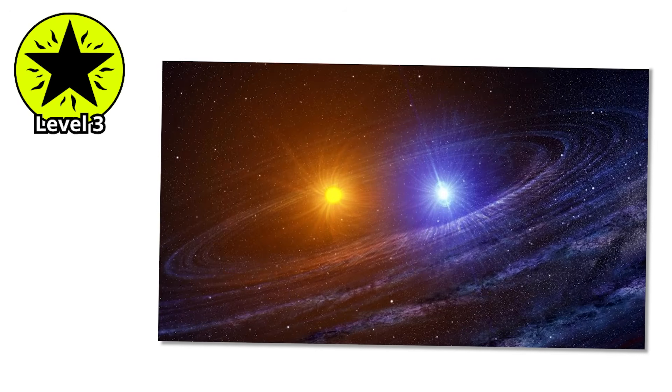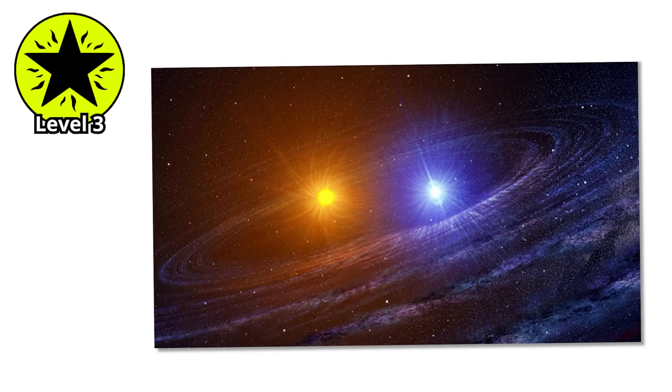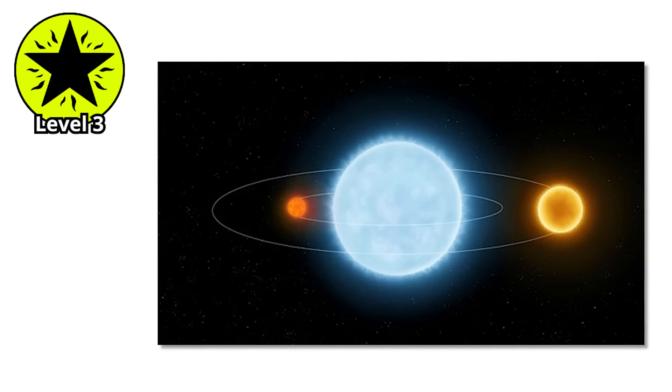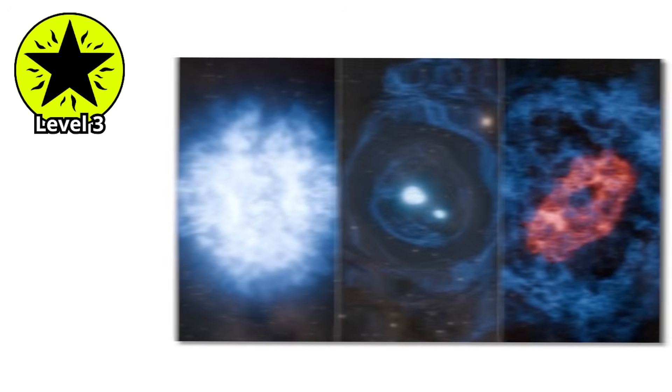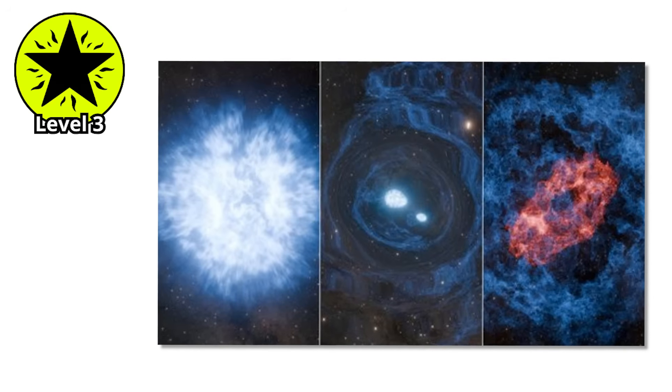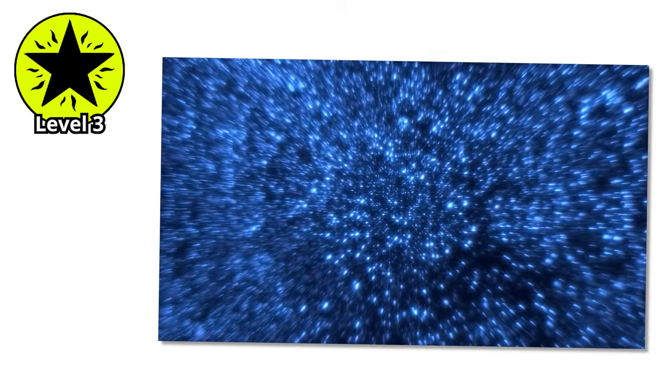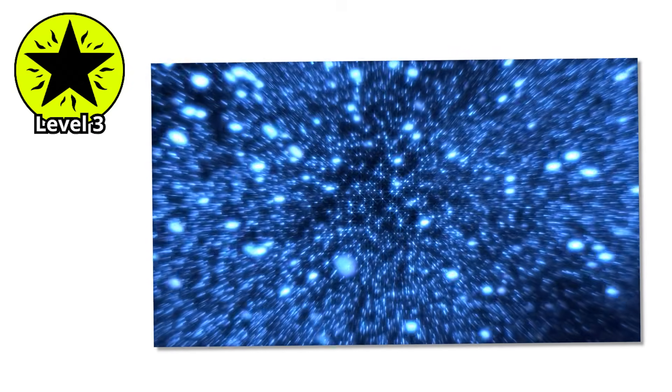But here's the trade-off for all that power. Blue giants burn through their fuel ridiculously fast. While the Sun will live for 10 billion years, a blue giant might only last 10 to 20 million years before exhausting its hydrogen. Eventually, it runs out of options. The core collapses and the star explodes in a supernova, briefly outshining entire galaxies and scattering the heavy elements necessary for planets and life across space.